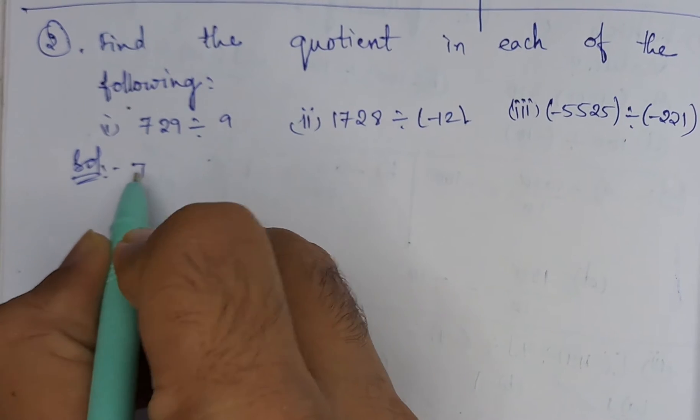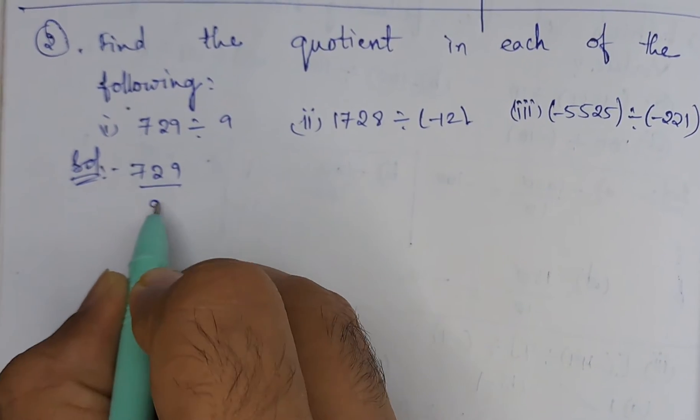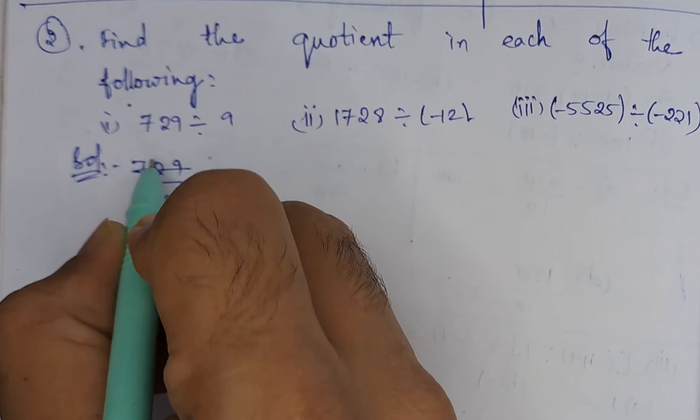In the first bit we are having 729 divided by 9. So we can directly cancel: 9 ones are 9, 8 nines are 72, 9 ones are 9. So we got 81.